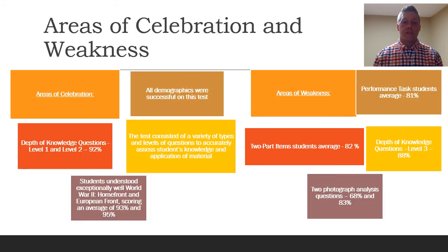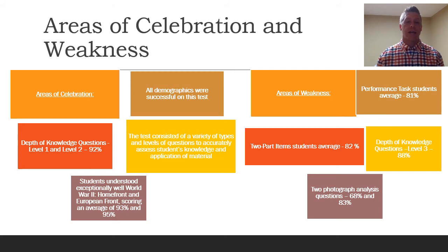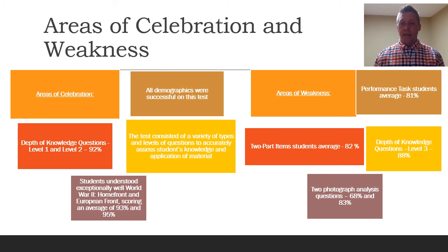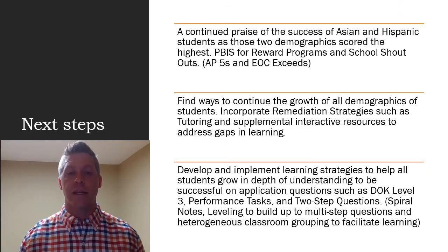Areas to celebrate: all demographics did well on this test. DOK level one and two came in at 92%. The test consisted of a variety of question types to accurately assess students' knowledge and application of material, including performance tasks. World War II scores were exceptional — the European front and the home front scored 93% and 95% respectively, showing a really good grasp of those two theaters of the war. Areas of weakness include performance tasks at 81%, two-part items averaging 82%, DOK level three questions at 88%, and analyzing photographs questions at 83% and 68%.